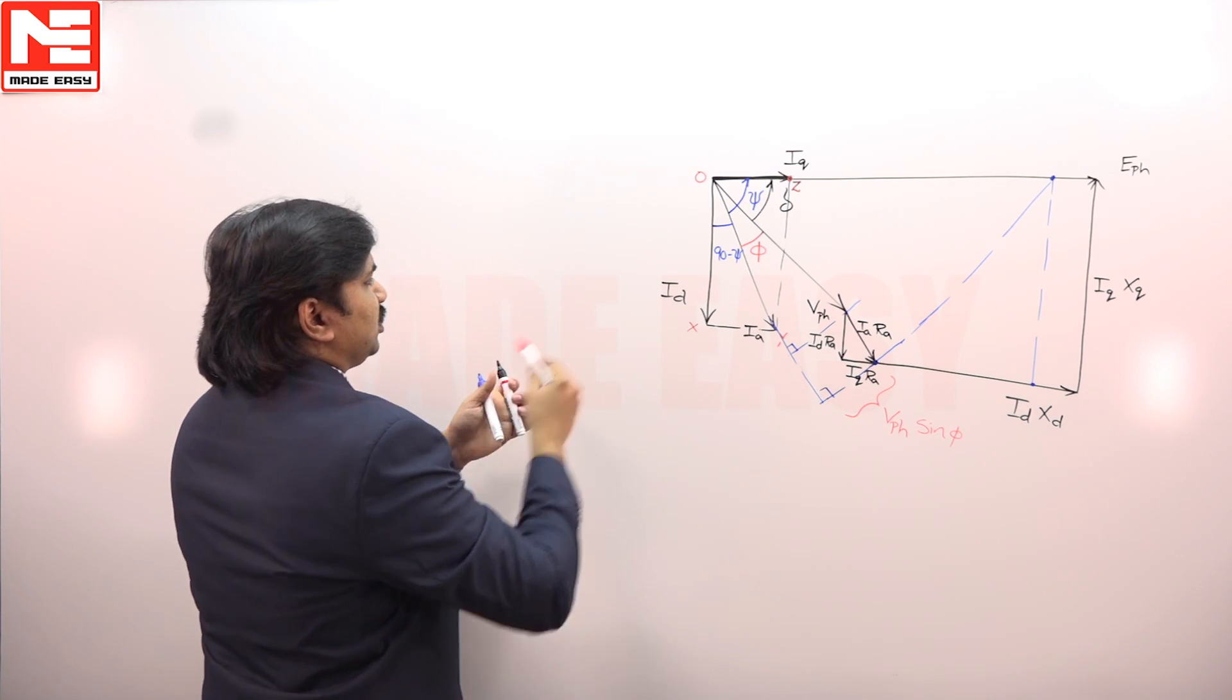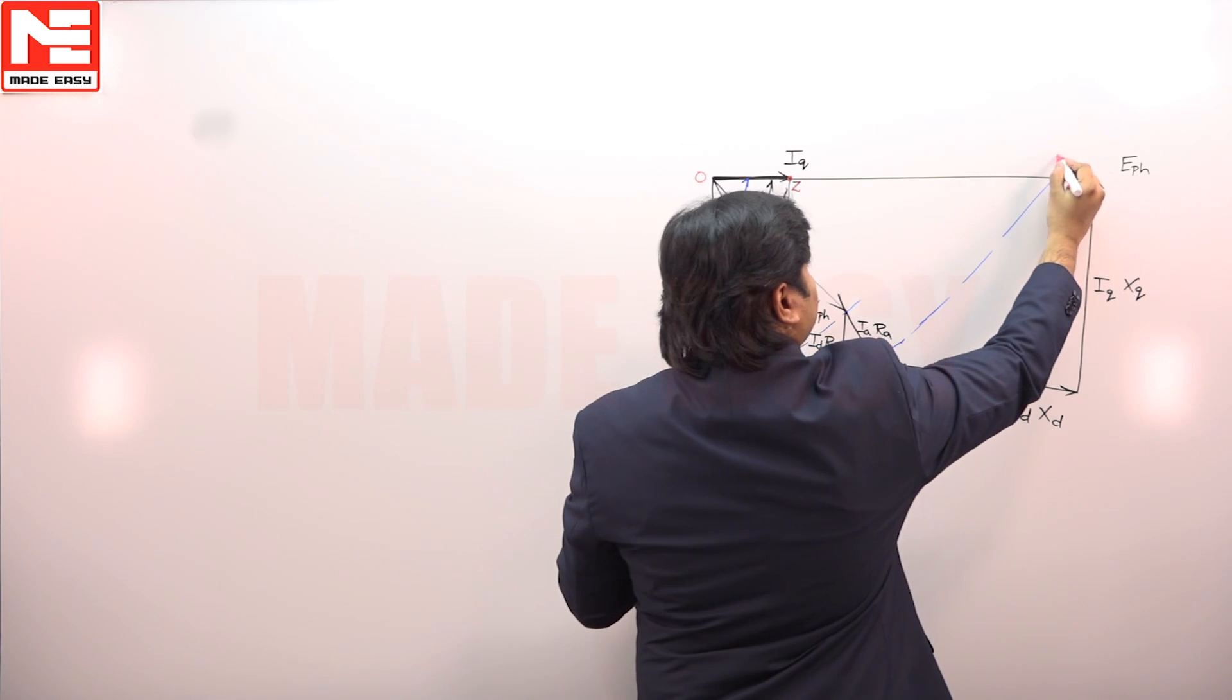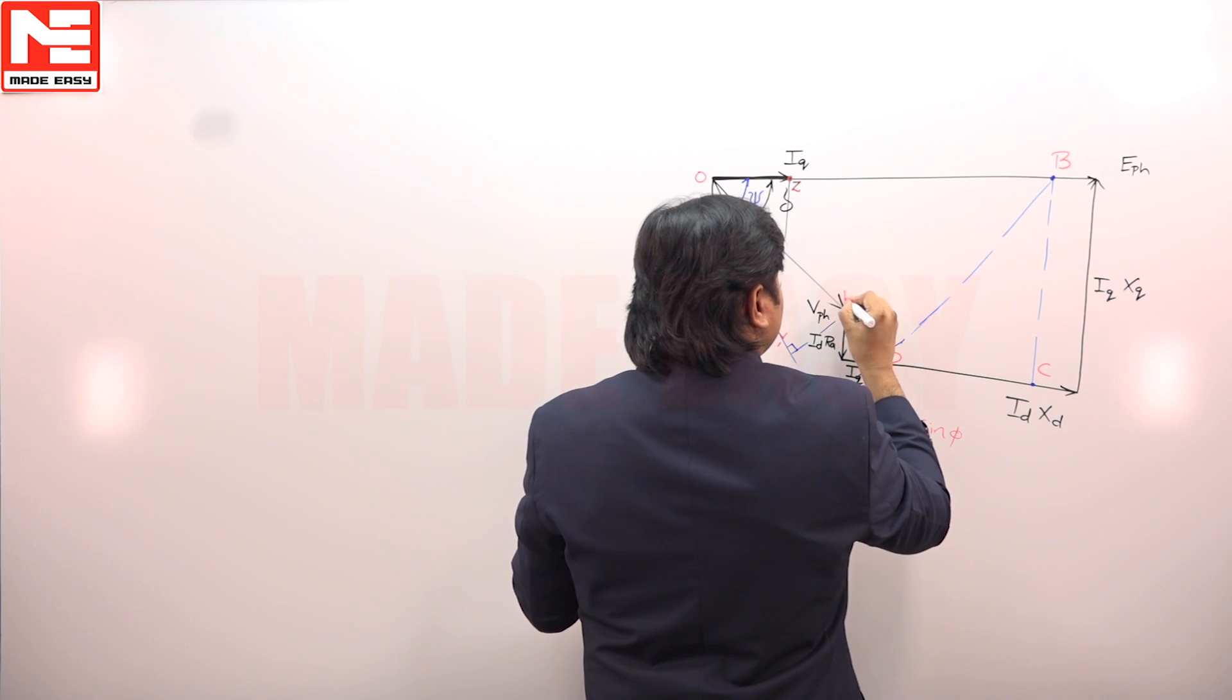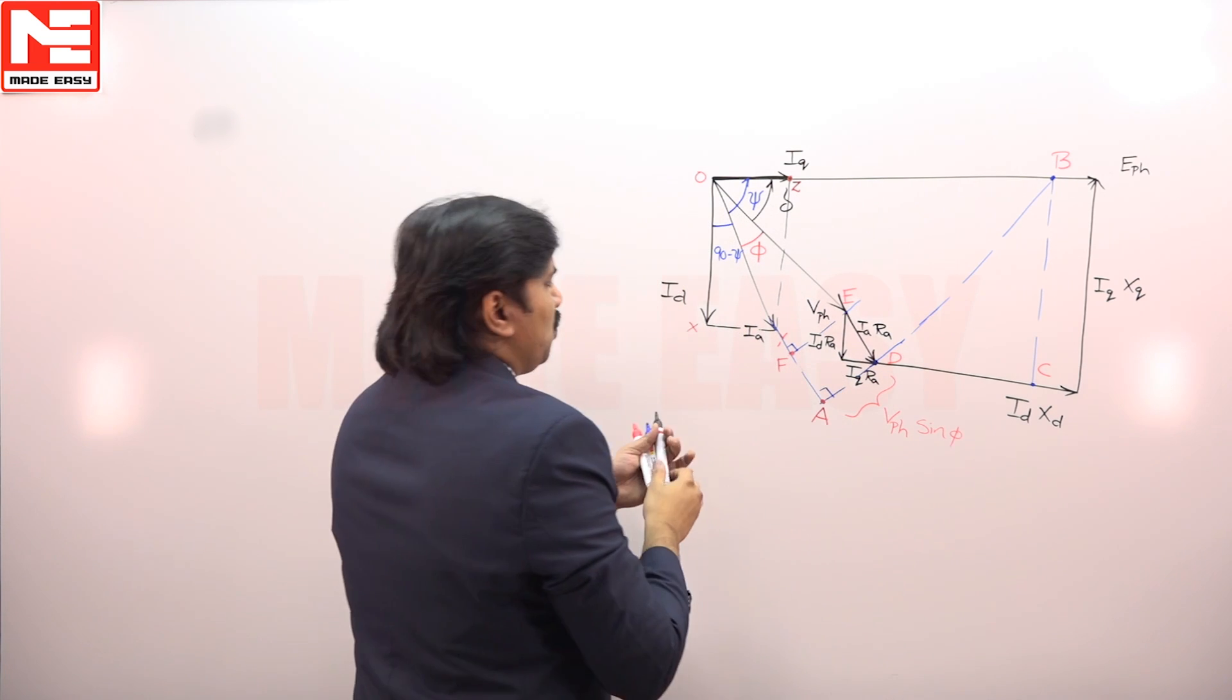So, let us take this is O, this is A, this is B, C, D, E, F.